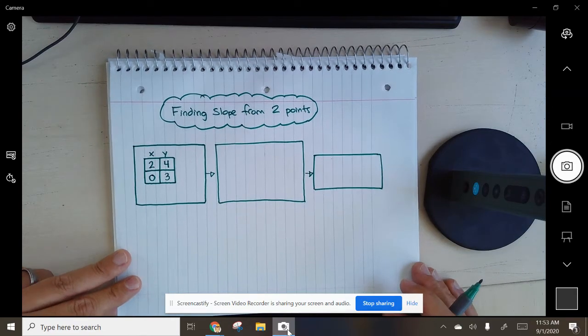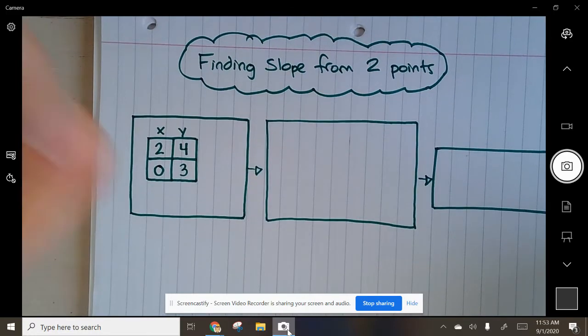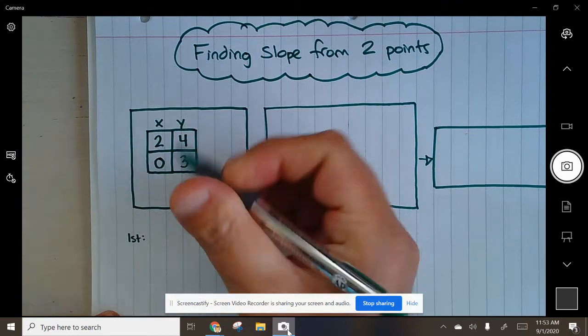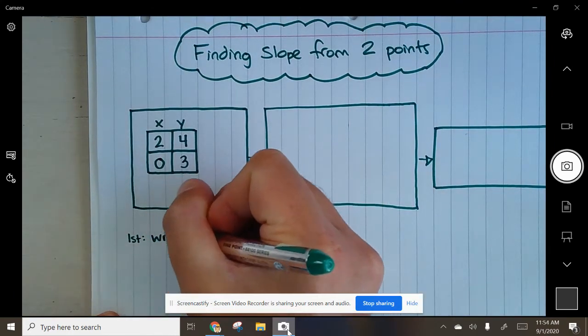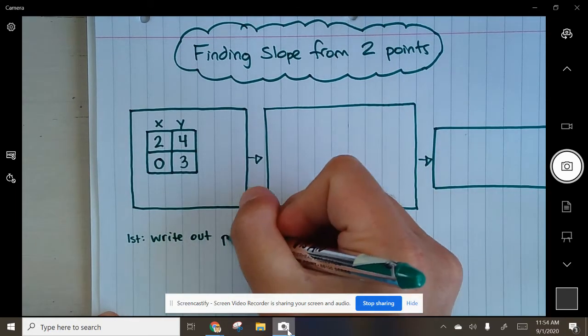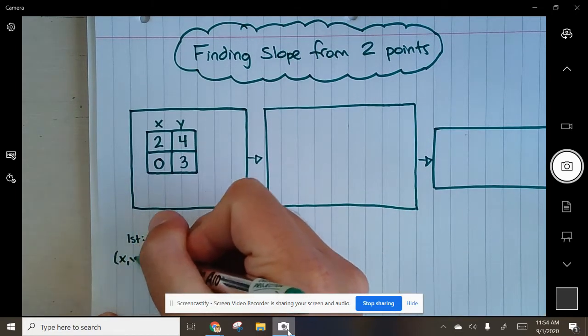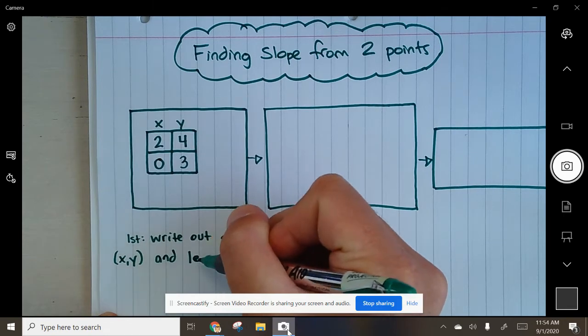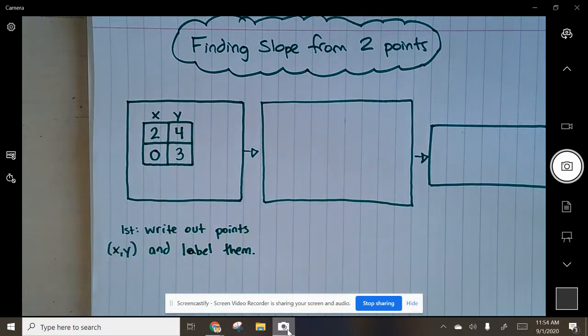Alright, so first step is to look at this data and I'm going to zoom in on there. The first step would be to write out points and label them, so these points are